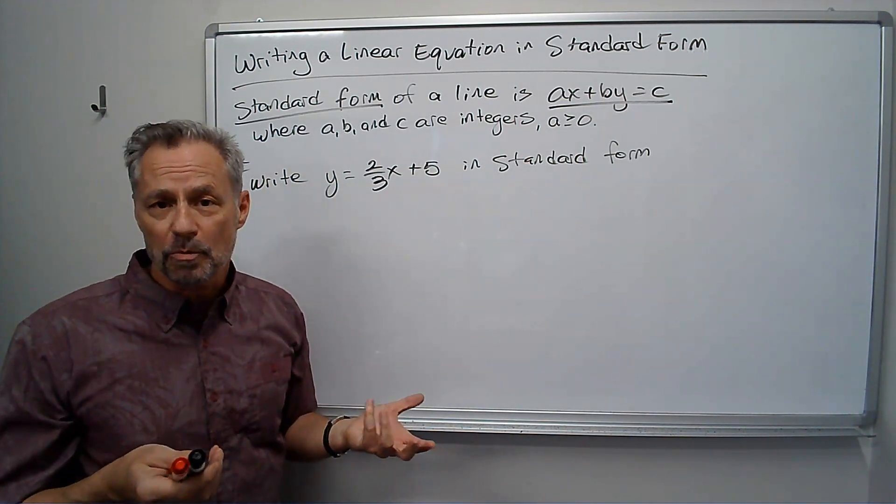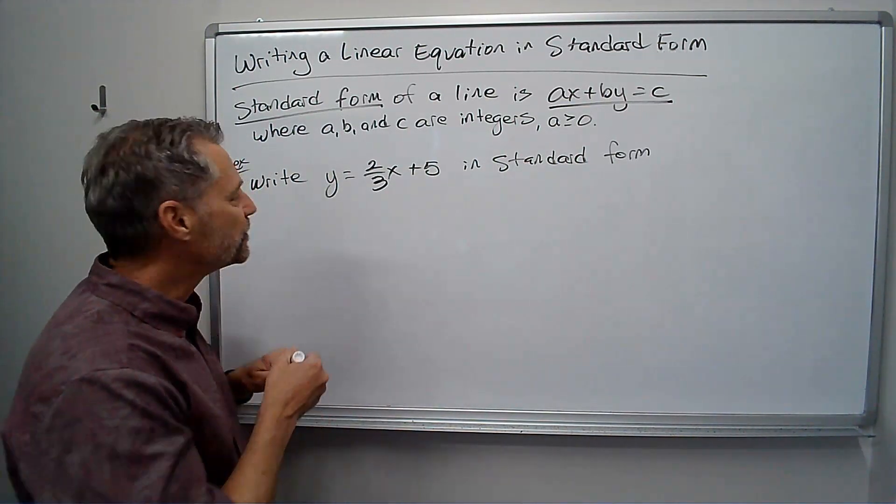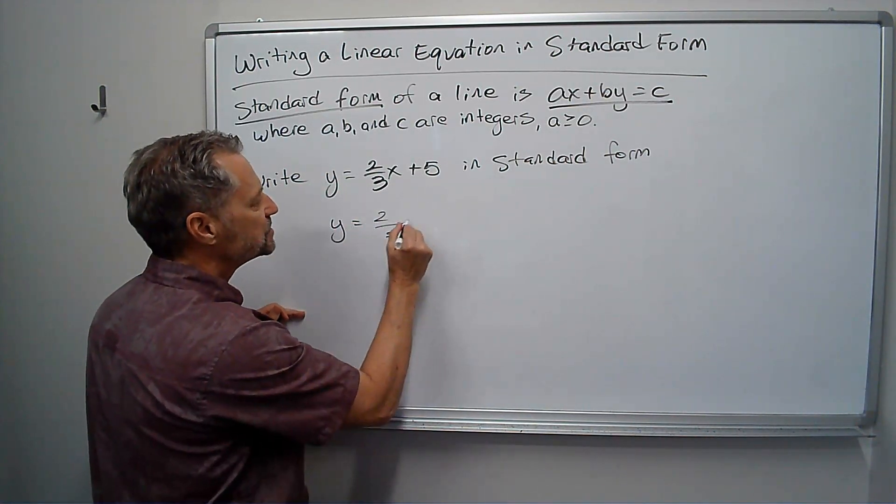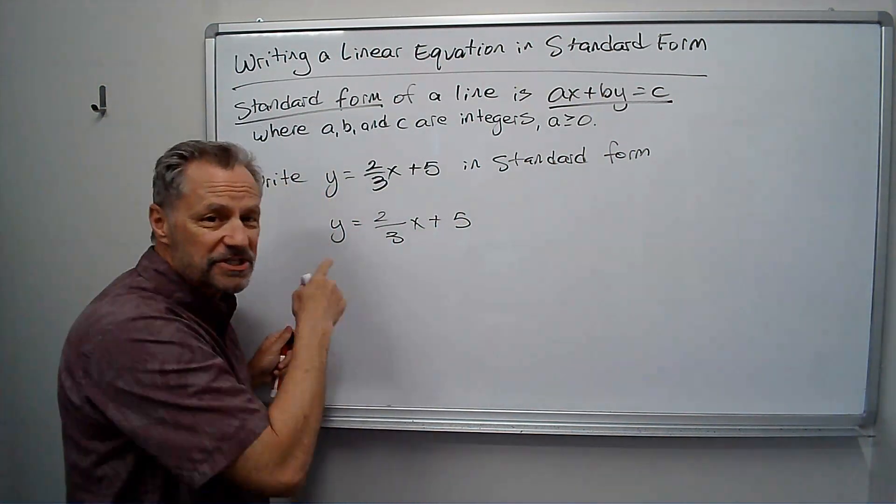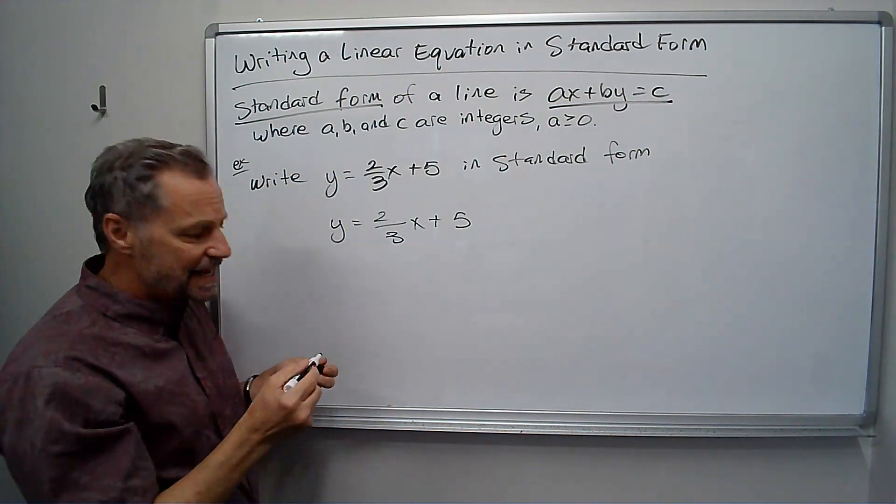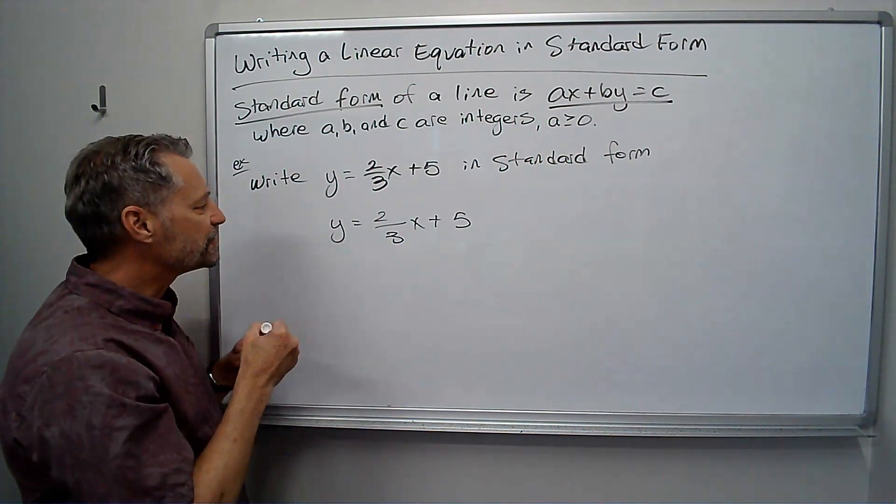Notice right now it's in slope-intercept form. Okay, so let me rewrite the problem. Y equals two-thirds X plus five, and the first thing we notice is there's fractions in there. We can't have fractions, so I need to multiply by three to get rid of the fraction.